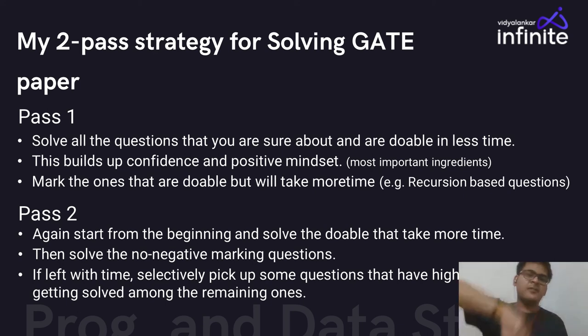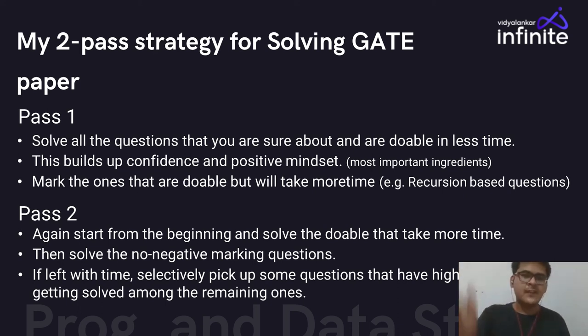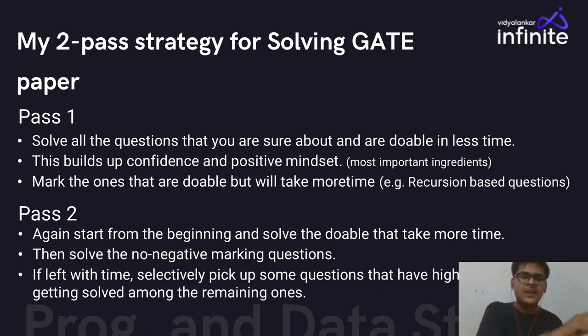Then in Pass Two — again 100% of the paper but with a different mindset. In Pass One you focused on quantity of questions solved; now you know which questions remain. Start Pass Two from the beginning with the questions marked for review and solve the doable ones that take more time.